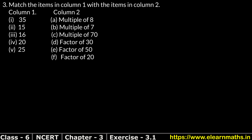Let's do question number 3 of exercise 3.1. Question 3 is: match the items in column one with the items in column two. The first item is 35 — we have multiples of 8, 7, and 70 listed. For 35, since 5 sevens are 35 or seven fives are 35, and the factors of 35 are 1, 35, 5, and 7 — so 35 is a multiple of 7.